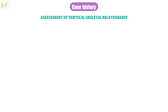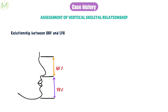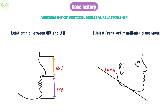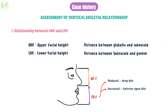Now let's assess the vertical skeletal relationship. This can be done by assessing the relationship between upper and lower facial height or by clinical FMA. Upper facial height is the distance between glabella and subnasale — glabella being the point between the eyebrows and subnasale being the junction of the nose with the upper lip. Lower facial height is the distance between subnasale and gnathion. In normal vertical relationship, the ratio of lower to upper facial height is 55 to 45. Lower facial height is reduced in deep bite and increased in anterior open bite.